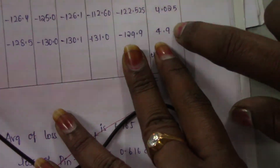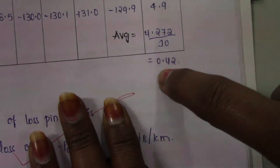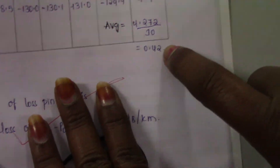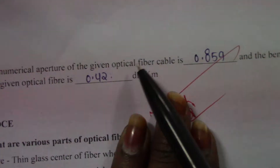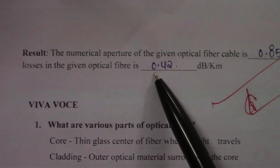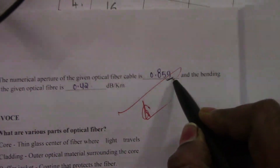After calculating all these losses, do the average: add all five values and divide by five to get the average loss. My average loss for these readings is 0.42 decibels per kilometer. Note that the minus sign indicates loss representation. Finally, the result: the numerical aperture of the given optical fiber is 0.85 (no units), and the bending losses of the given optical fiber is 0.42 decibels per kilometer. Thank you.